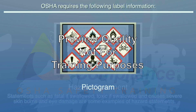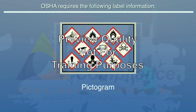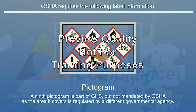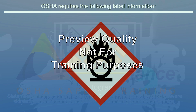A pictogram is a composition intended to convey specific health and physical hazard information about the chemical. OSHA has mandated eight specific pictograms to be used on chemical labels. A ninth pictogram is part of GHS but not mandated by OSHA, as the area it covers is regulated by a different governmental agency. Each pictogram is in the shape of a red square set at a point and includes a black hazard symbol on a white background with a red frame sufficiently wide to be clearly visible.